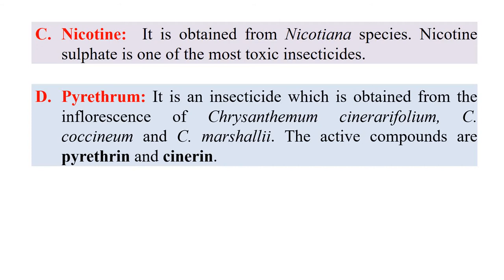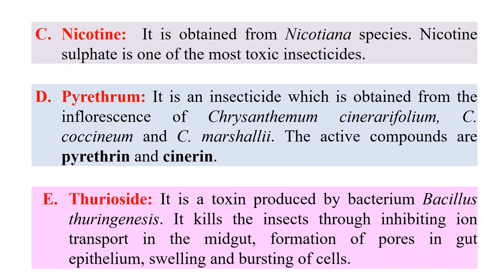Similarly, delta-endotoxins (thurocytes) are toxins produced by the bacterium Bacillus thuringiensis. These occur as crystals in the bacterium and kill insects by inhibiting ion transport in the midgut, resulting in the formation of pores in the gut epithelium. The cells burst and die, so delta-endotoxins can also be used as bio insecticides.